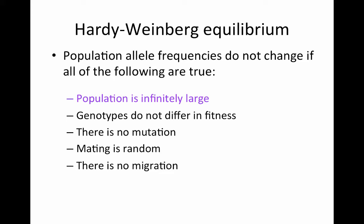The first condition on the list that I've highlighted is that the population is infinitely large. So if the population is not infinitely large — if we have relatively small population sizes in particular — then a factor called genetic drift can come into play. If you are going to associate genetic drift as a concept with one particular word, that word should be random.